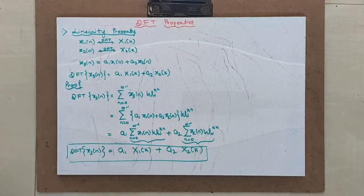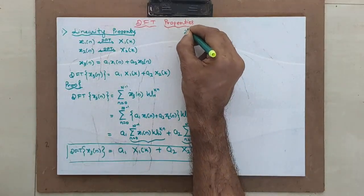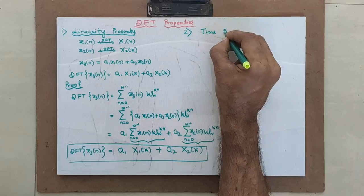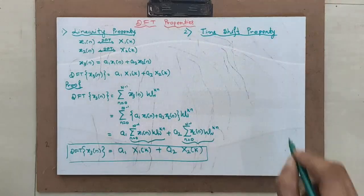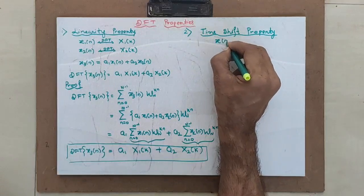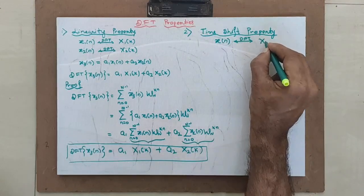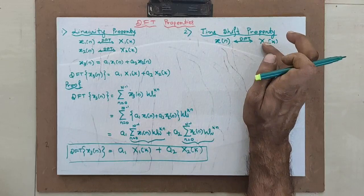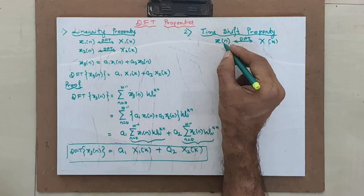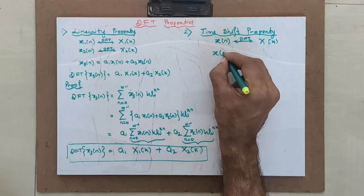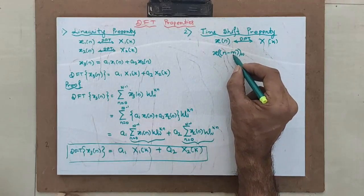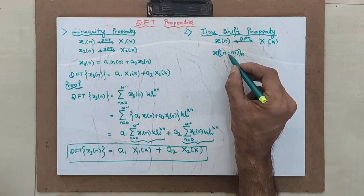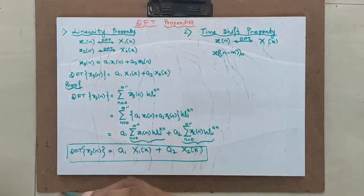The next property is the time shift property. Suppose there is a sequence x(n) whose DFT is known to you as x(k). Then suppose I shift this sequence circularly by m units, giving a new sequence x(n-m) modulo N. You have seen in the last class and in assignments how x(n-2) is represented circularly and shifted by 2 units.